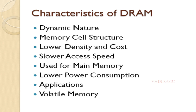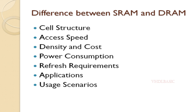Now we are going to discuss the differences between SRAM and DRAM. SRAM and DRAM are two distinct types of volatile memory used in digital design. While both serve the purpose of storing data, they differ in terms of their characteristics, structure, performance, and application. Cell structure: each SRAM cell typically consists of several transistors configured in a flip-flop circuit, resulting in a more complex cell structure that provides faster access time and does not require periodic refreshing.